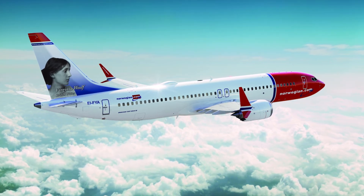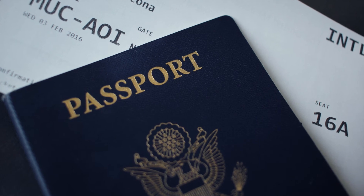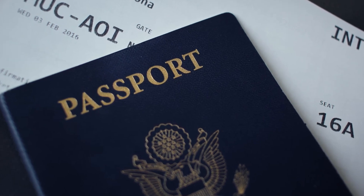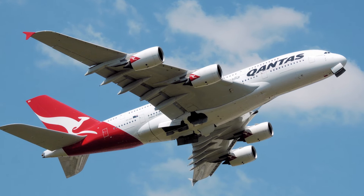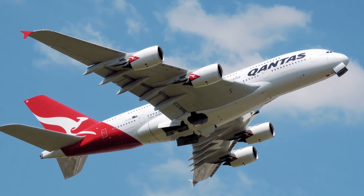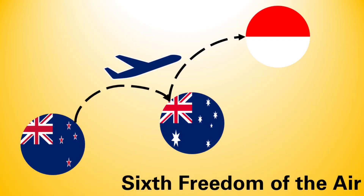There are four more unofficial ones that help build the framework for bilateral and multilateral agreements on airspace usage. The sixth freedom allows an airline to operate a flight between two foreign countries as long as there is a stop in its home country. For example, a flight by an Australian airline from Indonesia to New Zealand with a stop in Australia.